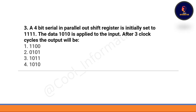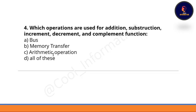Question 3: A 4-bit serial-in parallel-out shift register is initially set to 1111. The data 1010 is applied to the input for three clock cycles. The output will be — option A: 1100, option B: 0101, option C: 1011, option D: 1010. The correct option is B, which is 0101.